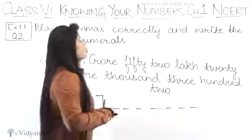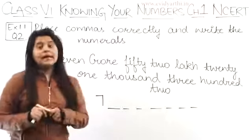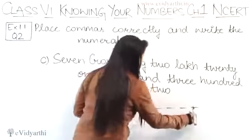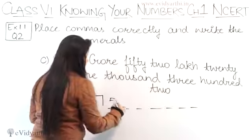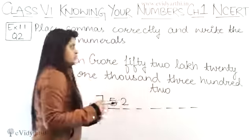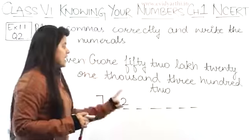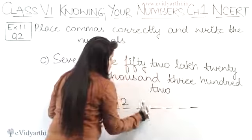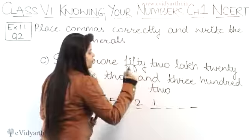Next is 52 lakh. Lakh has how many digits? How many zeros are in lakh? Lakh has 5 zeros. So this is 52 lakh. 1, 2, 3, 4, 5. This many digits will come. Two numbers remaining. So let's write this 52. So 7 crore, 52 lakh, 21,000. Thousand has 3 digits. 1, 2, 3. Here two are remaining. So this will be 21,000.